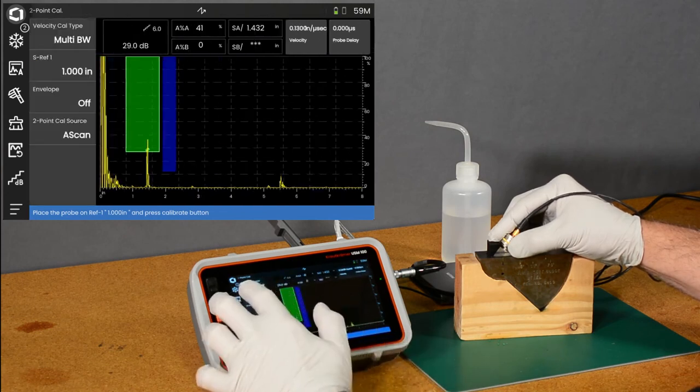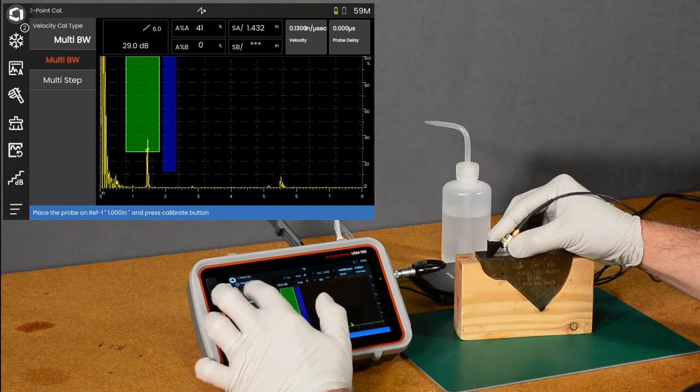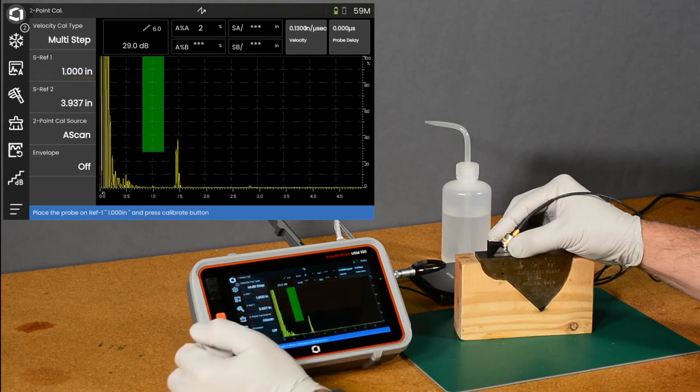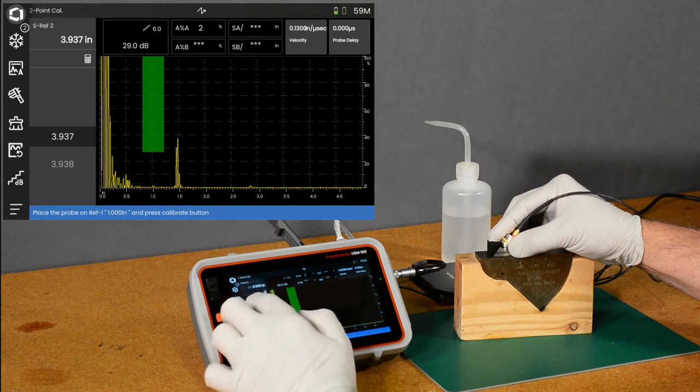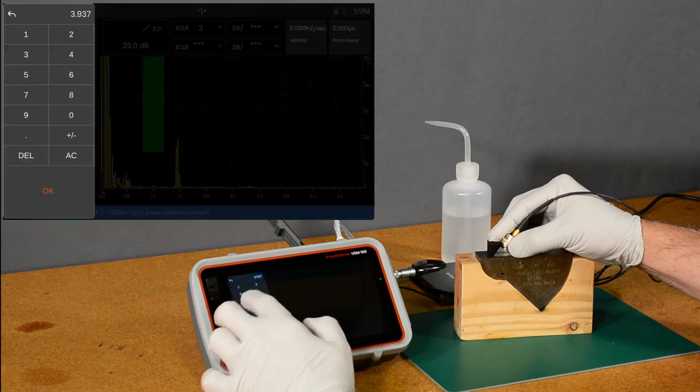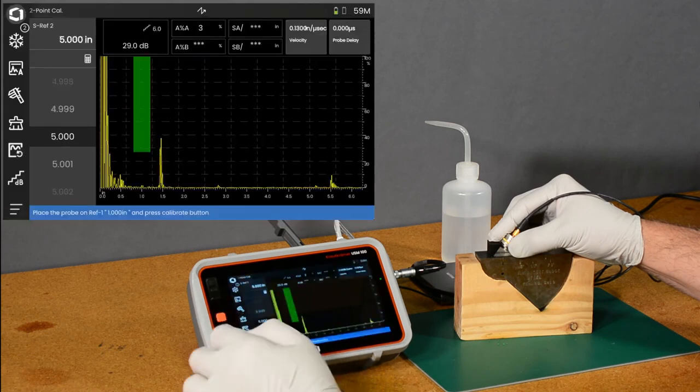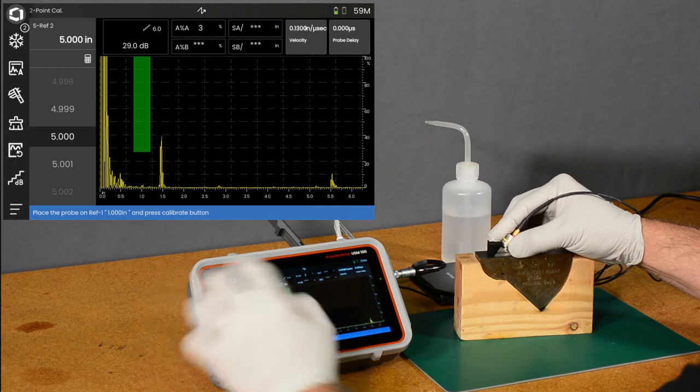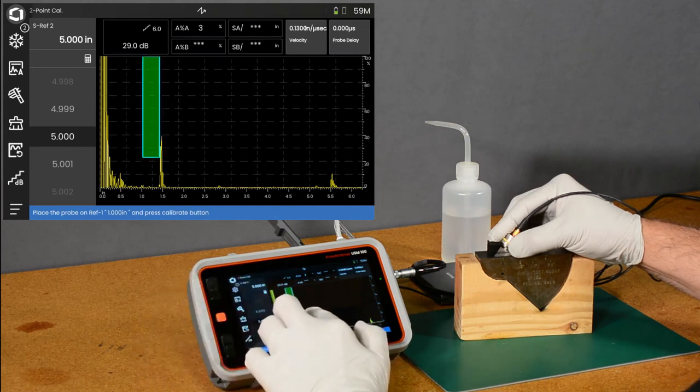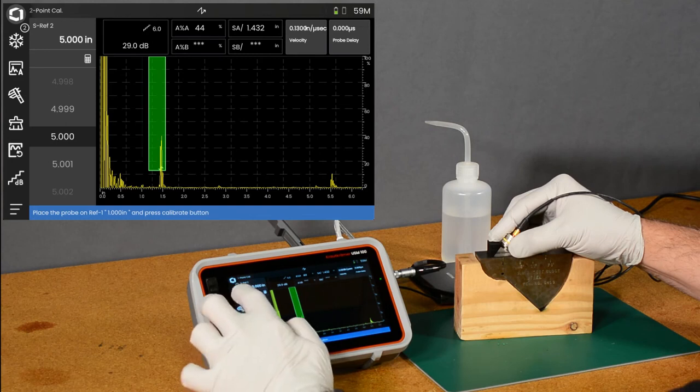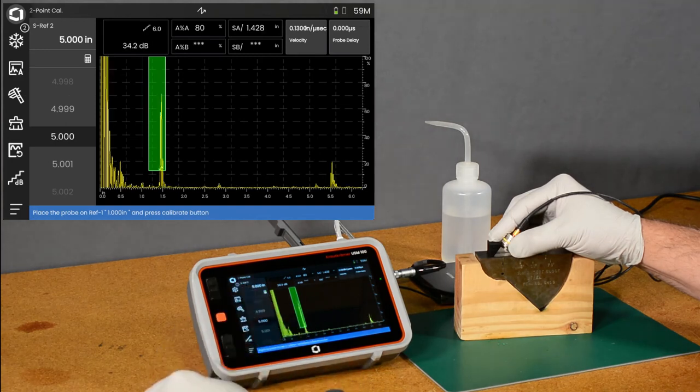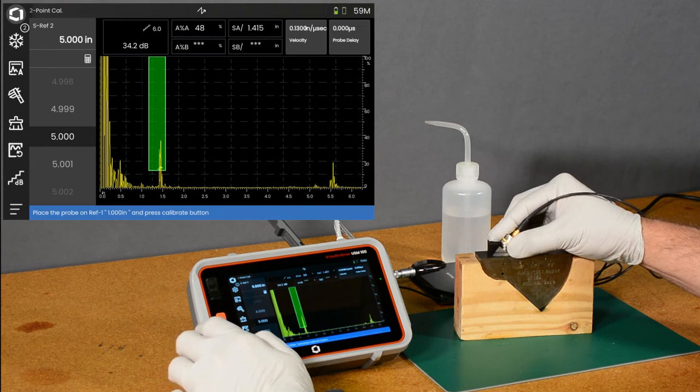We'll swipe out our sidebar and we're going to go to multi-step calibration. And we're going to tell it that we want to have our first reference at an inch. We're going to do our second reference at five inches. Okay we can drag our gate over the echo. And let's get that up to 80 percent screen height. Use the auto 80 feature to bring that up. Get it peaked up there.